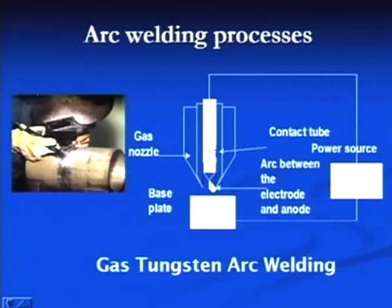In TIG welding, the electrode does not provide filler metal, but a separate filler rod may be used to fill the gap. The filler metal in this process may or may not be used. For joining thick plates, filler metal is normally used, but not for thin sheets.